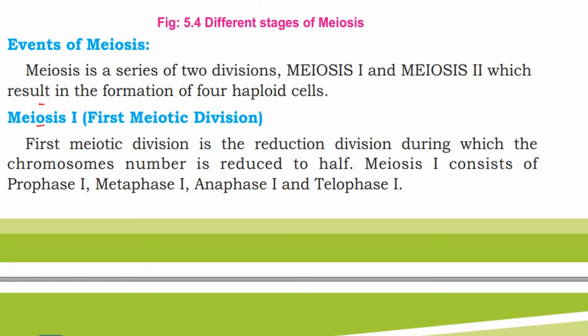The events of meiosis: meiosis is a series of two divisions — meiosis 1 and meiosis 2 — which results in the formation of four haploid cells. Today we will discuss meiosis 1, i.e. the first meiotic division.